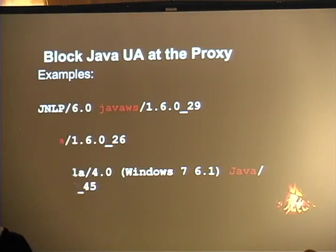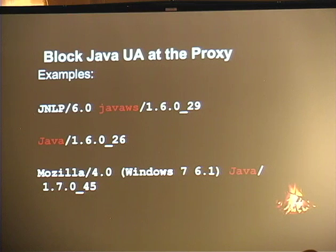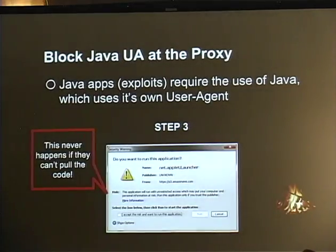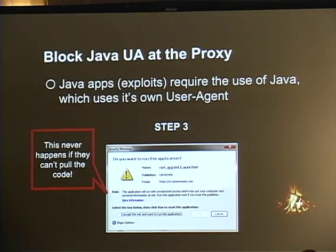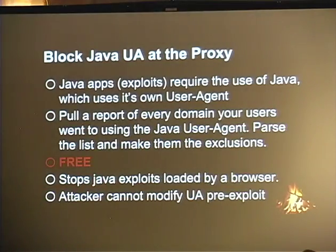You can actually tell from your proxy logs right now what Java versions all of your users are running — and attackers can see this too. If you don't want to block all Java user agents and just want to block out-of-date versions, you can, because it sends this version information to whatever website is invoking Java. If we block that Java user agent, the user is never trusted to say whether the code is good or not — because we all trust users to make that decision, right?